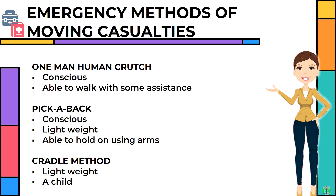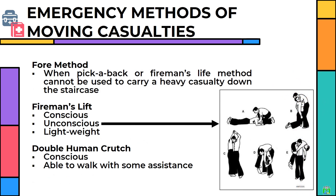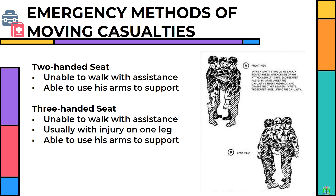Emergency methods of moving casualties include: one man human crutch — if the casualty is conscious and able to walk with some assistance; pick-a-back — if conscious, lightweight, and able to hold on using arms; cradle method — if lightweight or a child; fireman's lift — if conscious or unconscious and lightweight; double human crutch — if conscious and able to walk with some assistance; two-handed seat — if unable to walk with assistance but able to use arms for support; three-handed seat — if unable to walk, with injury on one leg, but able to use arms for support.